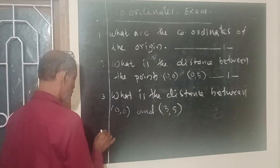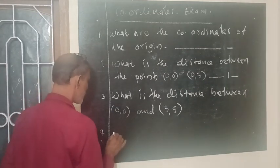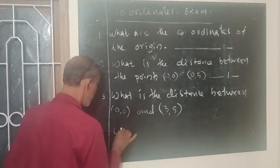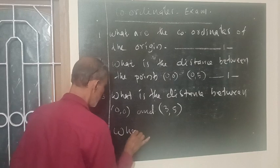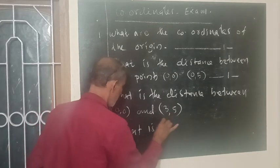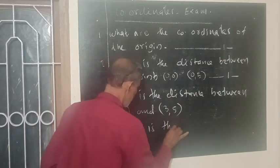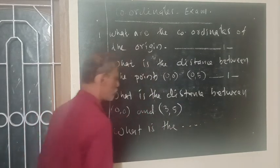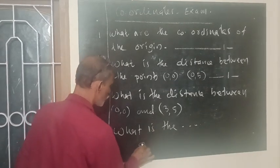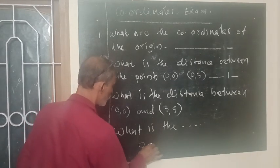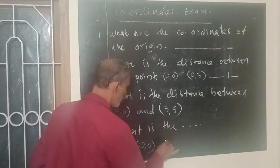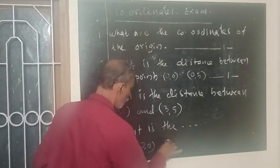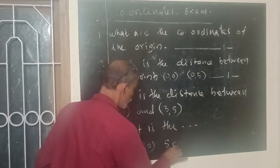Question number 4. What is the distance between the points (0, 0) — that means the origin — and (5, 0)?